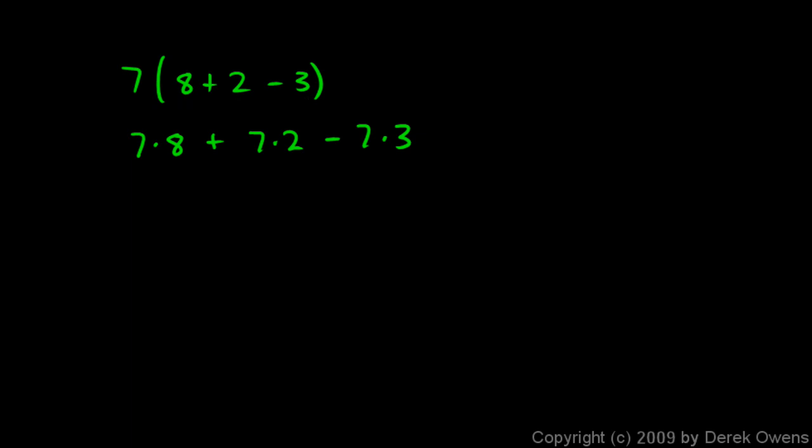And we can figure this out. 7 times 8 is 56, plus 7 times 2, which is 14. And then we have minus 7 times 3, which is 21. So 56 plus 14 minus 21. And that ends up equaling 49.